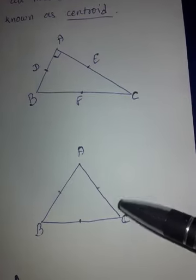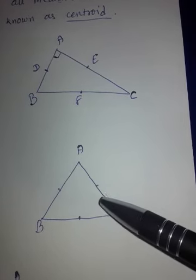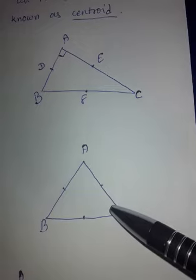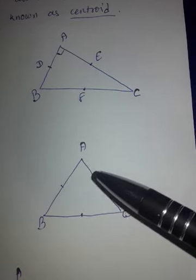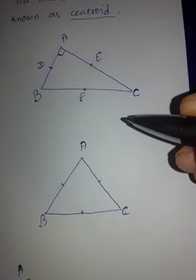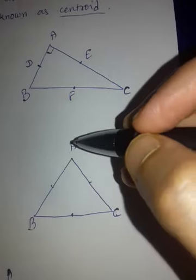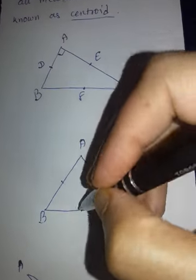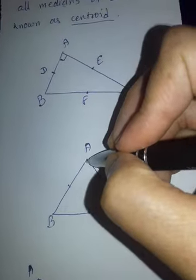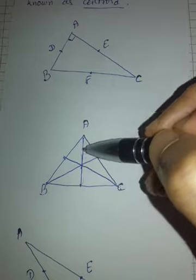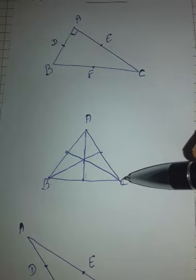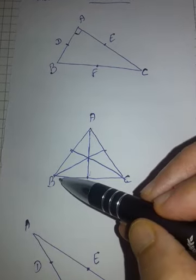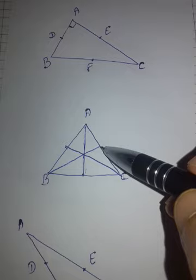A median joins a vertex and the midpoint of the opposite side. So if I talk about this acute angle triangle, take vertex A, the midpoint of the opposite side BC — this is the midpoint. When I join them, it becomes a median. When I join vertex C to the midpoint of the opposite side, this becomes a median. When I join vertex B with the midpoint of the opposite side, this also becomes a median.